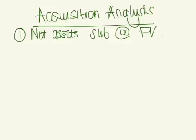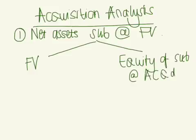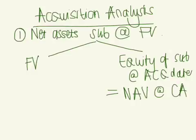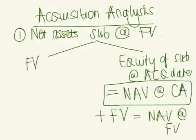There are two ways to calculate the net assets at fair value depending on the information given. First, you can be given the fair value of the identifiable assets and liabilities directly. The second, more common approach in consolidation questions, is that you're given the equity of the subsidiary at acquisition date — which equals the net asset value at carrying amounts — and then make adjustments for assets not valued at fair value to arrive at the net assets at fair value.